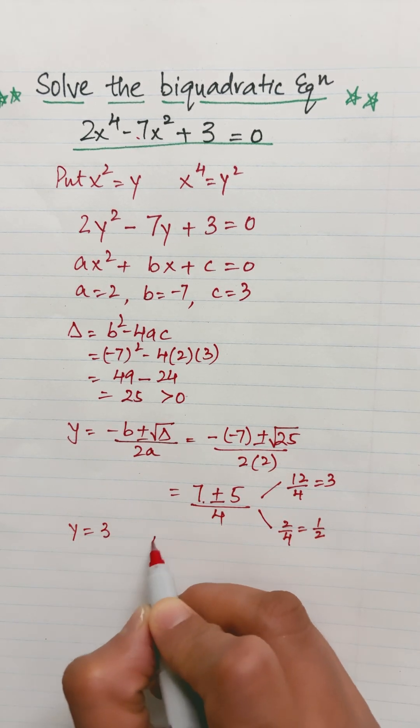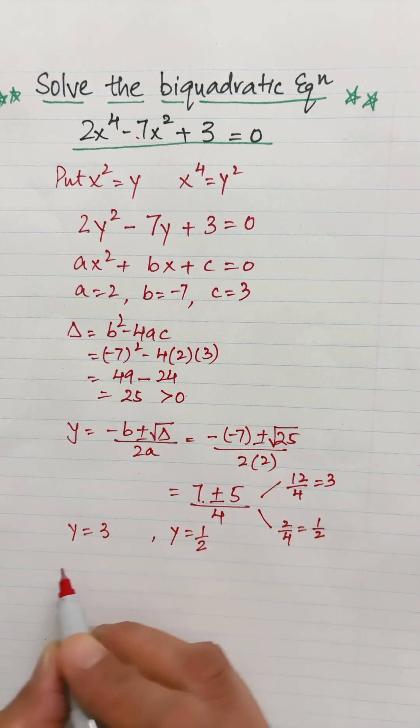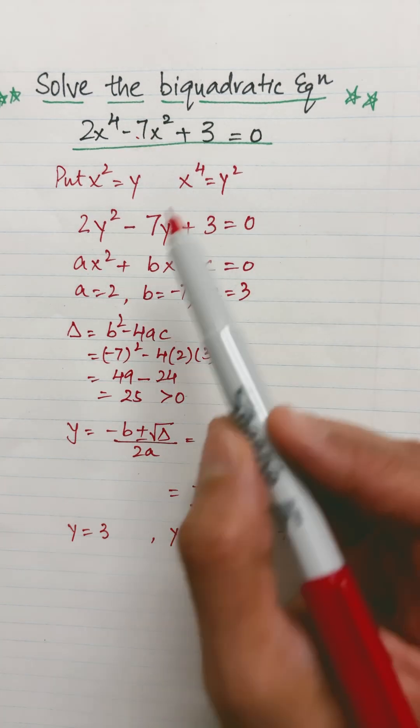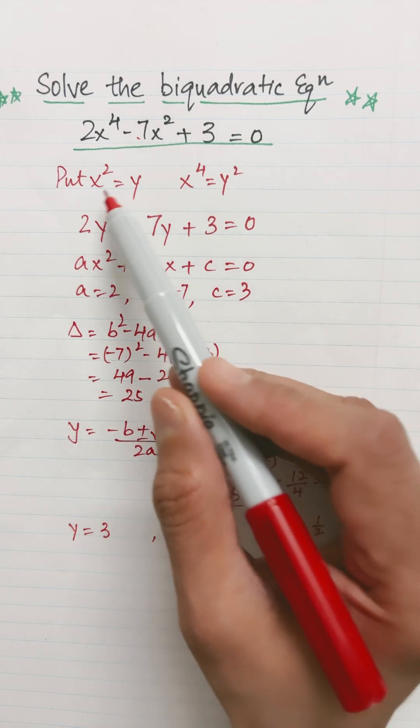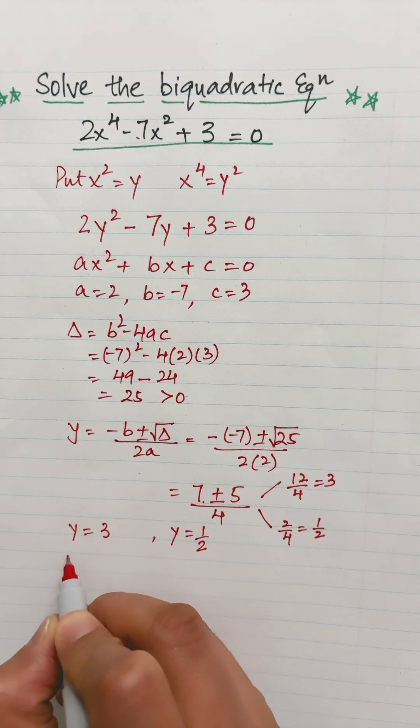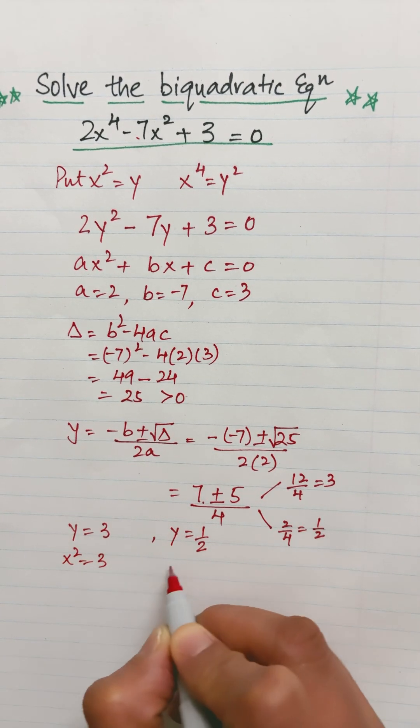But my equation was in x, not in y. And remember what did we put? We put y as x squared. So put it back: x squared is 3 and x squared is equal to half.